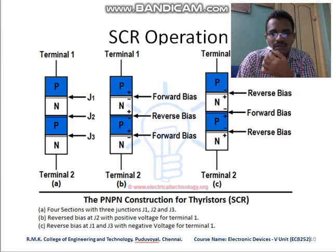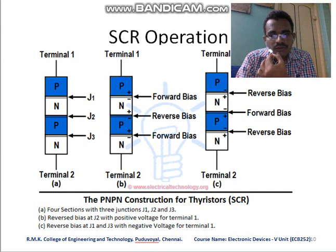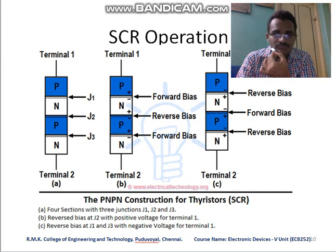Now we can see the operation of the SCR. The first diagram shows the basic SCR structure, and the second diagram shows forward biasing — where the P-type material is connected to the positive terminal of the battery and the N-type is connected to the negative terminal. In forward bias, the first P-N junction is forward biased, the middle N-P junction is reverse biased, and the next P-N junction is forward biased.